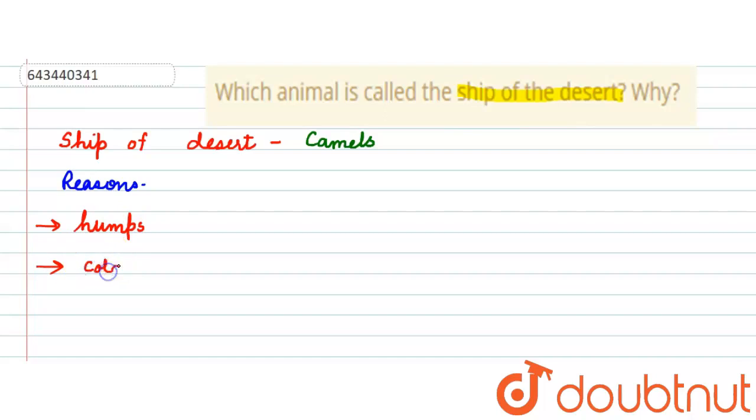Now talking about the second reason why they are ship of the desert - they are cold-blooded. Cold-blooded means they are very easily adaptable to the hot and humid temperature of the desert. We know in the desert the temperature is really very high.